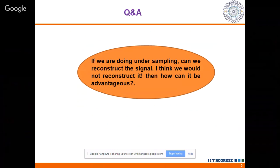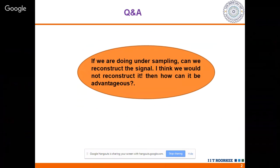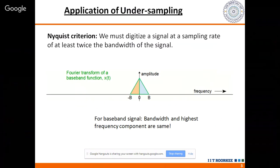The first question received was: if we are doing undersampling, can we reconstruct the signal? The Nyquist criteria states that if we have to digitize a signal, we must use a sampling rate at least twice the bandwidth. On screen, the bandwidth of the signal is B, and because it is a baseband case, the highest frequency component is also B. For the baseband signal, this Nyquist criteria is followed and we are able to get the signal easily.